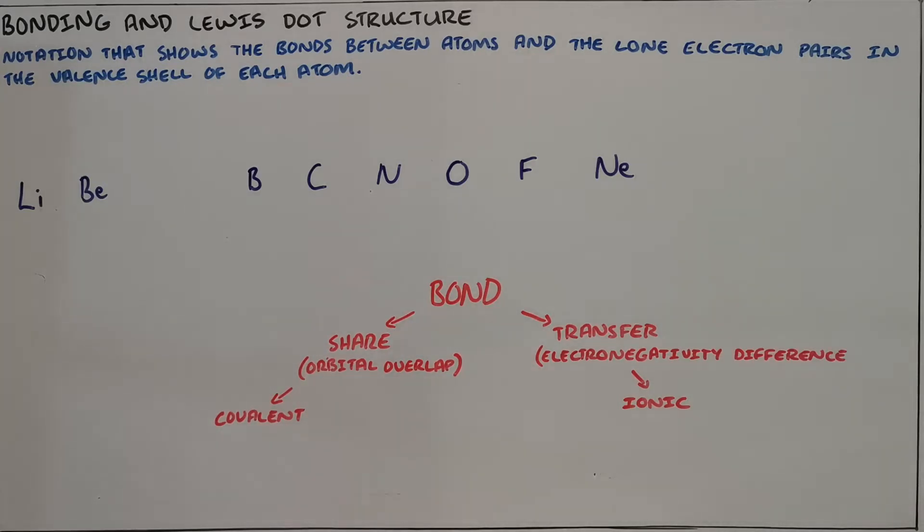The way that we do this is we write the element symbol, so here we have lithium, and then we indicate the number of electrons that is in the valence shell. The reason why we only focus on the valence shell is because that is the shell that would play a role in whether or not an element bonds.